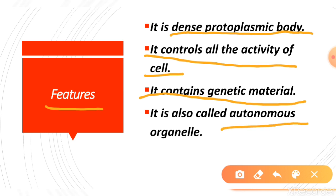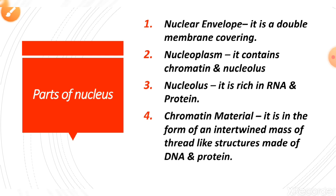The nucleus is called an autonomous organelle. The nucleus, in a living organism, is present in a central position. But in mature plant cells, a vacuole is present in the center, so the nucleus shifts to the periphery — meaning it moves to the side. Now we will learn how many parts the nucleus has.